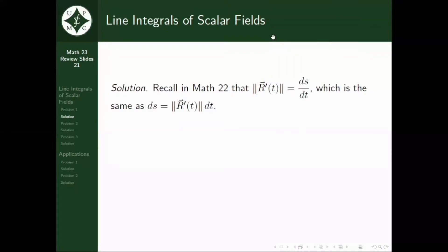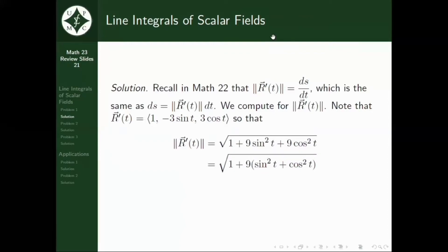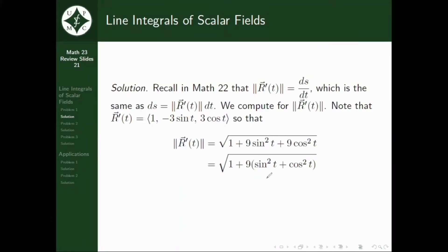Now we proceed by computing the norm of r'. Note that r' is given by (1, negative 3 sine t, 3 cosine t), so that its norm is equal to the square root of the quantity 1 plus 9 sine squared t plus 9 cosine squared t, which is just equal to the square root of 1 plus 9 times the quantity sine squared t plus cosine squared t.